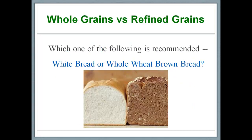Now that we know that whole grains are better than refined grains, can you answer the question on your screen? Which one of the following products is recommended: white bread or whole wheat brown bread? The answer is whole wheat brown bread, because whole wheat brown bread is made of whole wheat, while white bread is made of refined wheat. My recommendation is that you replace refined grains with whole grains wherever it is possible — consuming whole grain cereals for breakfast, bread made of whole grains for lunch, and if you want pasta in the evening, then that pasta should be made of whole grains or whole wheat.